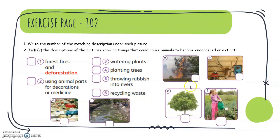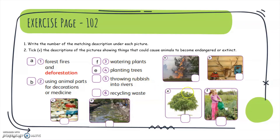The first description is forest fires and deforestation — picture A. Good job. The second is using animal parts for decoration or medicine — picture B. Number three is watering plants — picture F. And planting trees — picture E. Number five, throwing rubbish into rivers — picture D. And the last one, recycling wood — picture C.